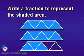Let's write a fraction to represent the shaded area. Now remember, in a fraction, the numerator is the number of parts being considered — or in our case, the number of parts shaded. The denominator is the number of equal parts in the whole.